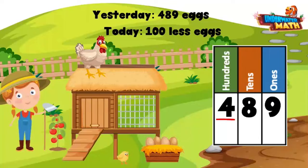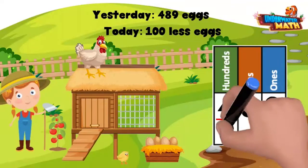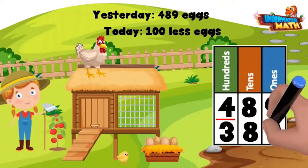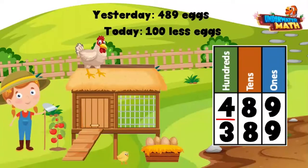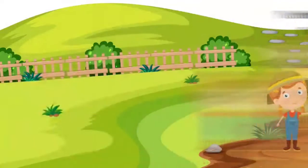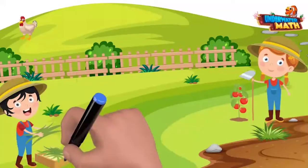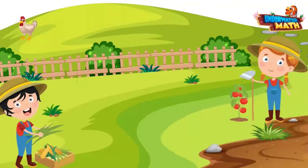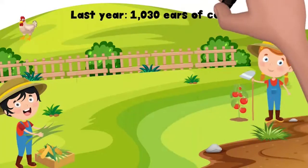The hundreds place in 489 is a four. Since I collected 100 less eggs today, that four is going to come down to a three. 389 is 100 less than 489.